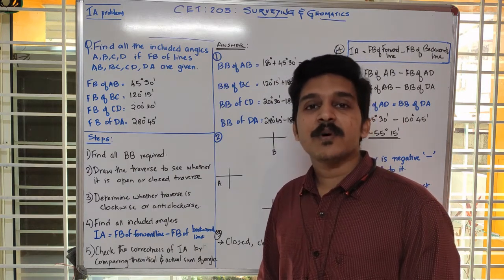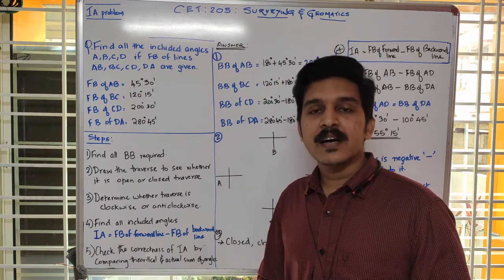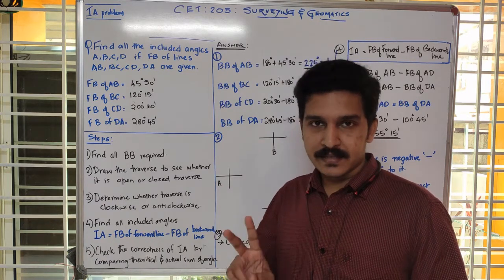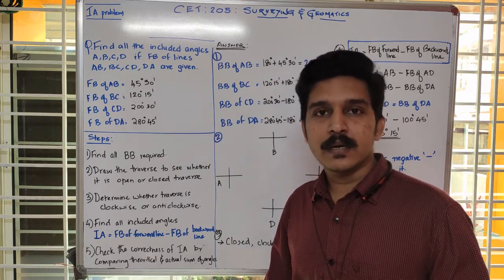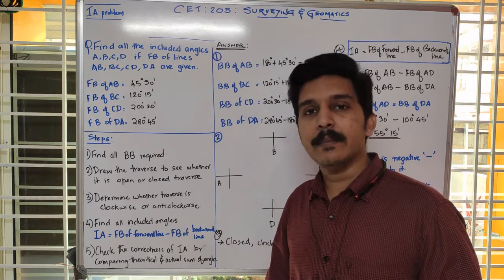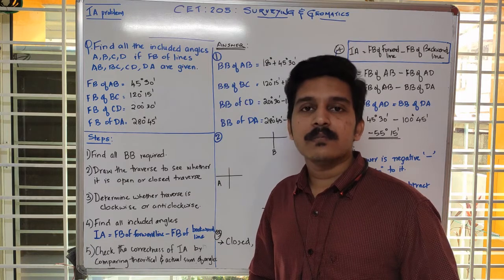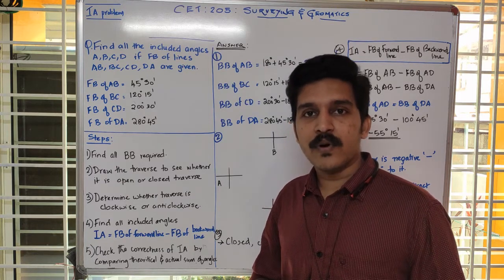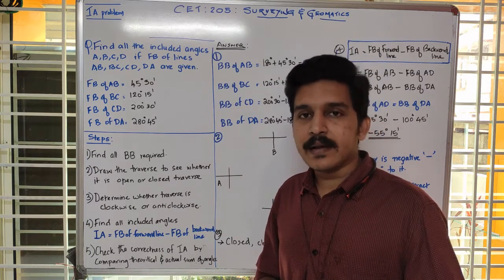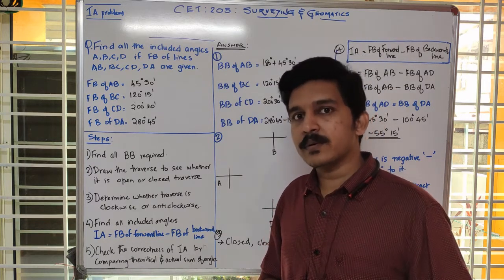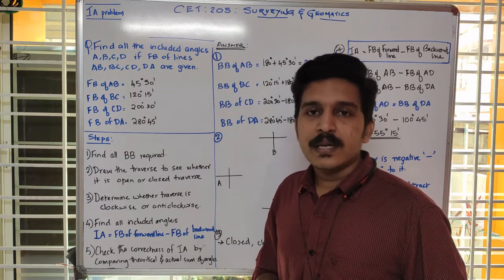In the last class we discussed about what an included angle is — the angle subtended between two lines. We also discussed how to find an included angle using an equation related to fore bearing and back bearing of given lines. In this class we will be discussing a problem related to included angles, finding the included angles between various lines and checking whether our calculations are correct.